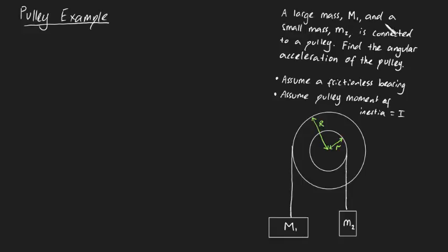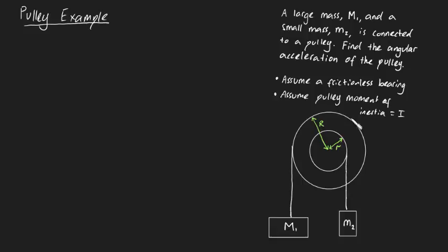G'day guys. A large mass M1 and a small mass M2 is connected to a pulley. Find the angular acceleration of the pulley. We've got this strange-looking pulley with an outer radius capital R, and wound around it is a rope connected to this large mass M1. It's also got another groove with radius lowercase r, and wound around it is a rope connected to the smaller mass M2.